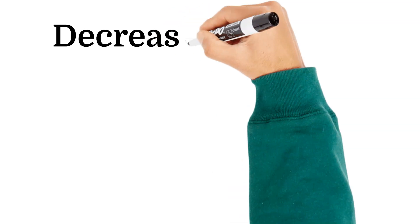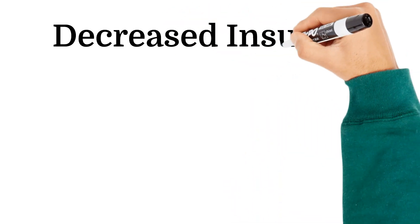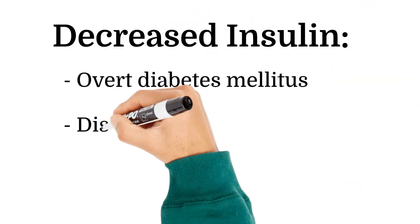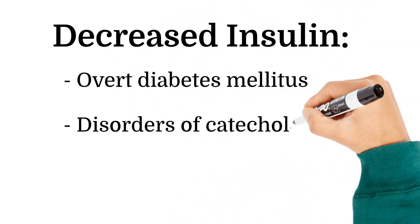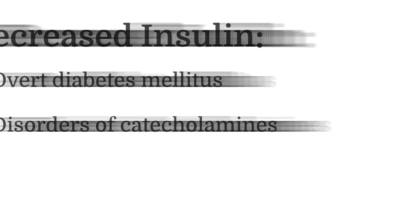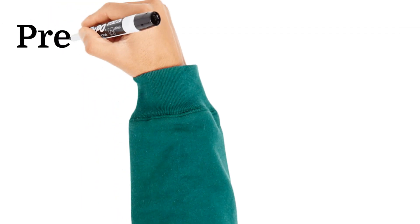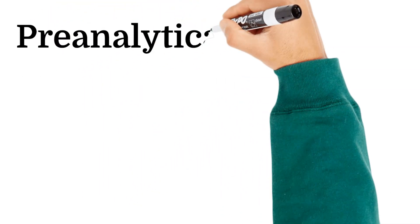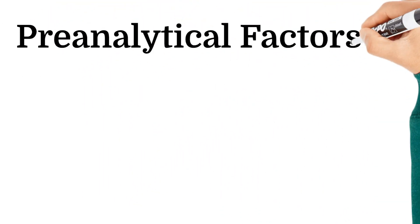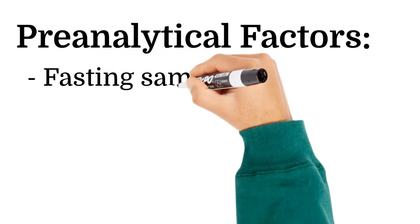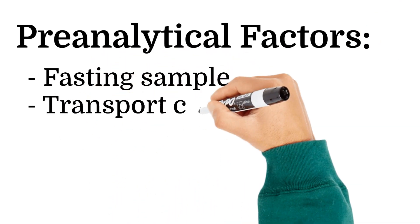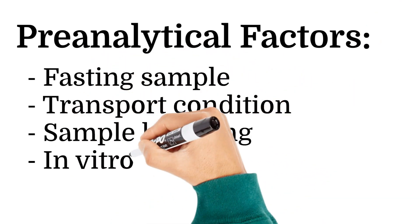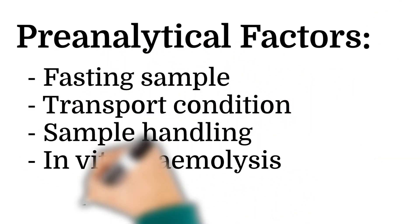Decreased levels of insulin may be seen in overt diabetes mellitus and disorders of catecholamines. Pre-analytical factors such as fasting, transport conditions, specimen handling, and hemolysis should be considered, as they impact the insulin result.